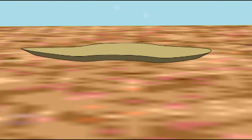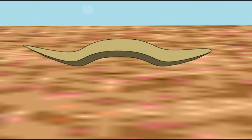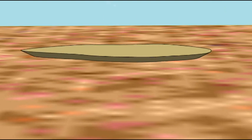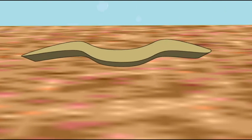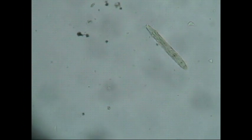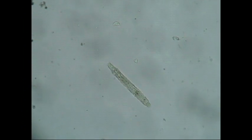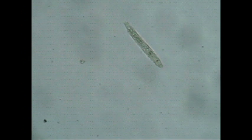In the Ediacaran fauna, worms, and more commonly the trails of worms are known, and so bilaterans were present prior to the Cambrian period.